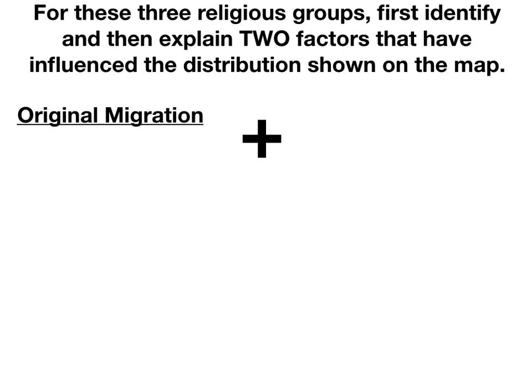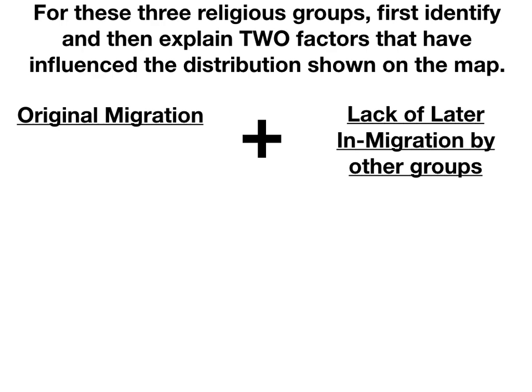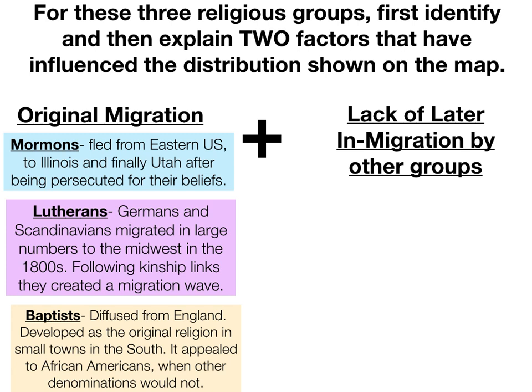Much like the Midwest and Utah, the South is a rural area and does not attract a large number of international migrants, so there have been no major subsequent immigration waves. Comparing and contrasting these three religions, the two major reasons why they dominate their areas are the original migration combined with a lack of in-migration by other groups. We have the Mormons located around Utah, the Lutherans located in the upper Midwest centered around Minnesota, and the Southern Baptists in the South.